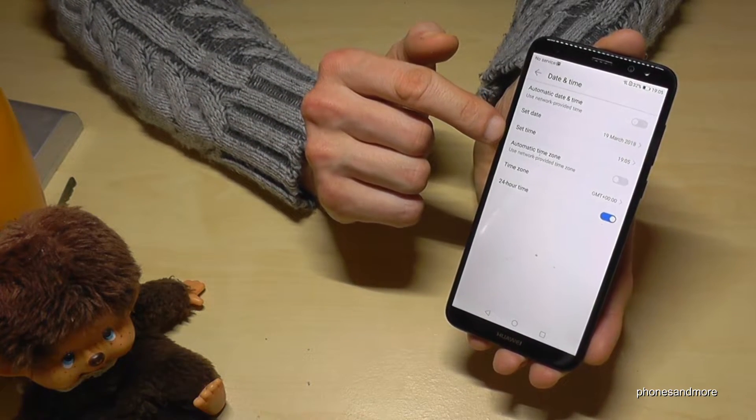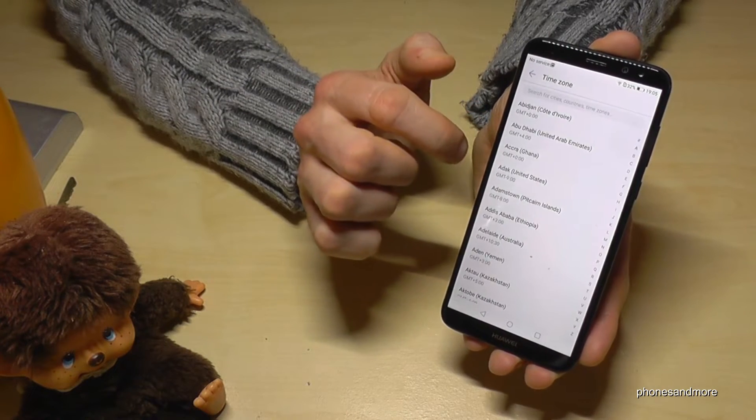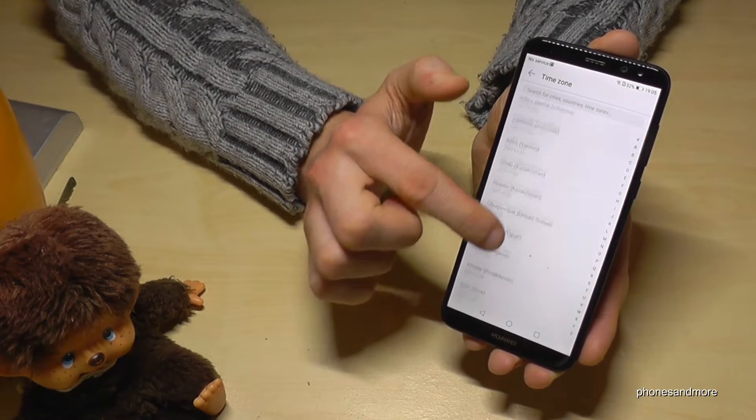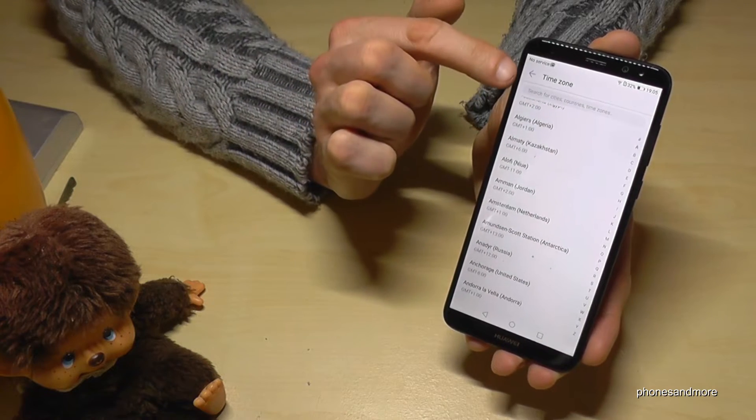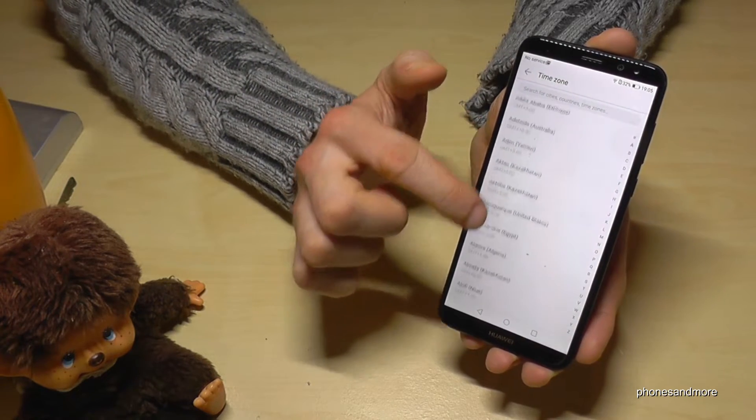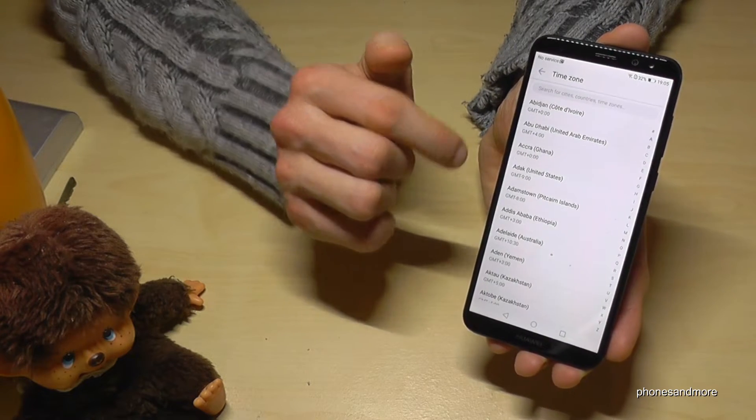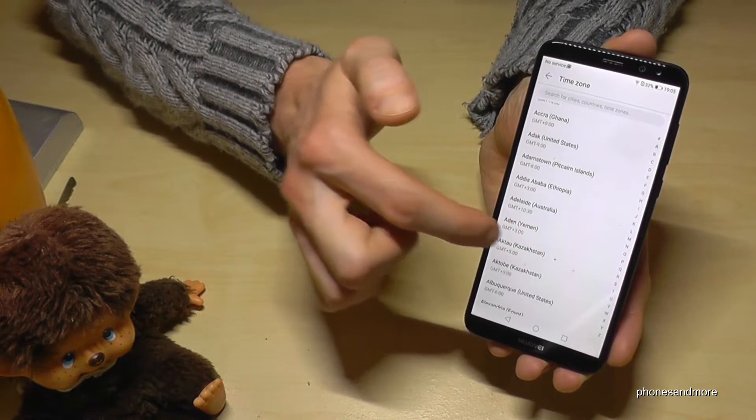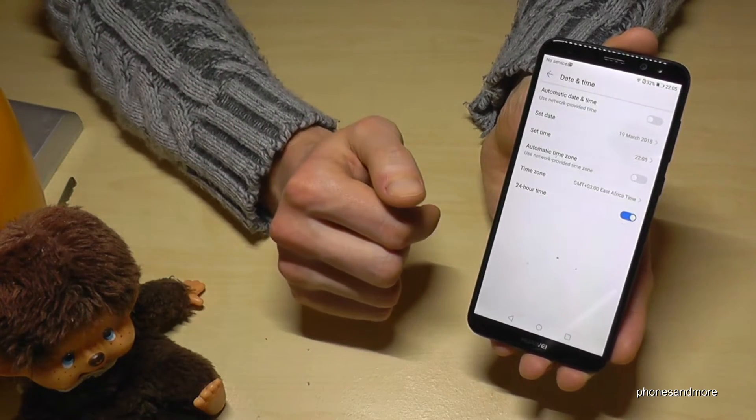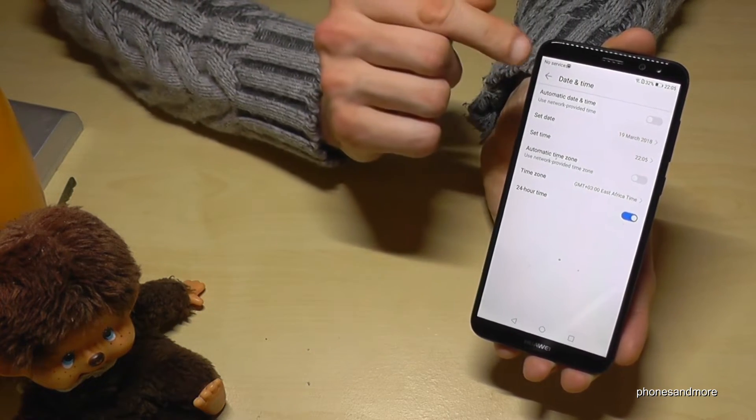You can also change the time zone. You just look for your city you live in. You can also search for it, but there are not all the cities listed of course. Then you choose maybe a city, let's say Addis Adebay, and then you have now set up your time.